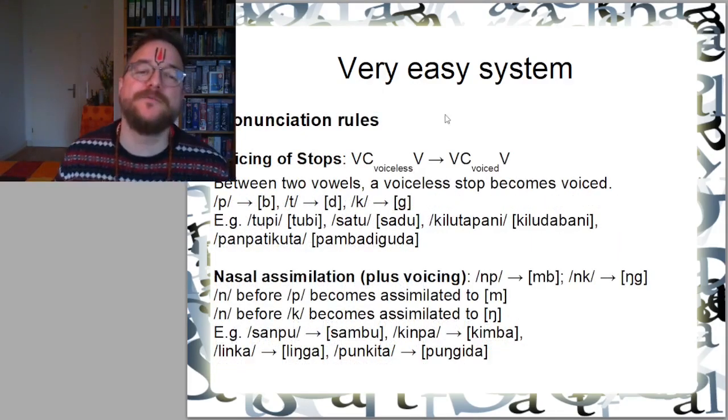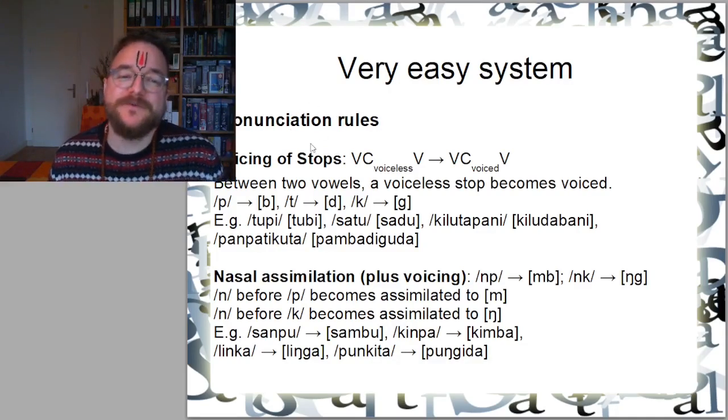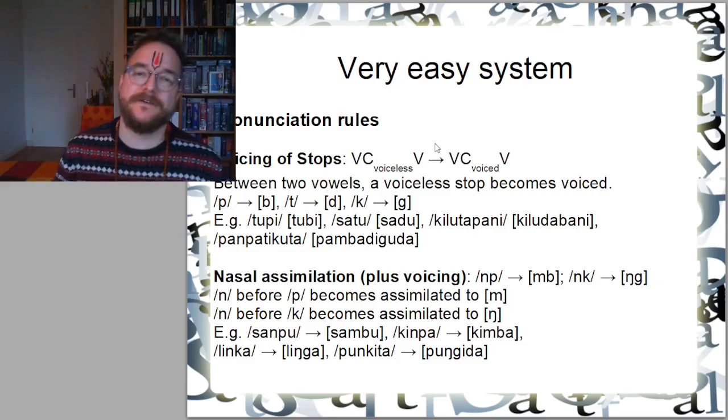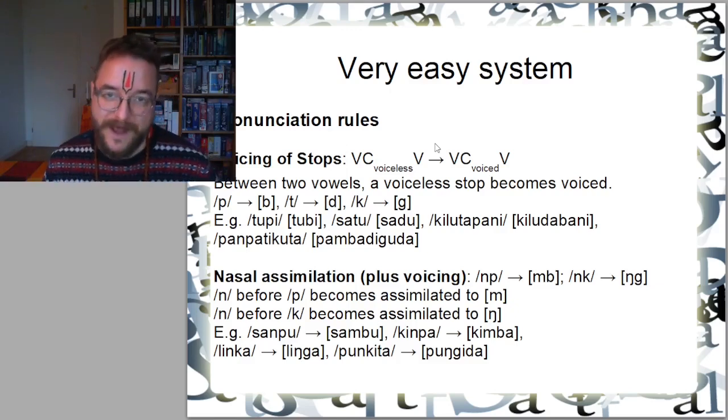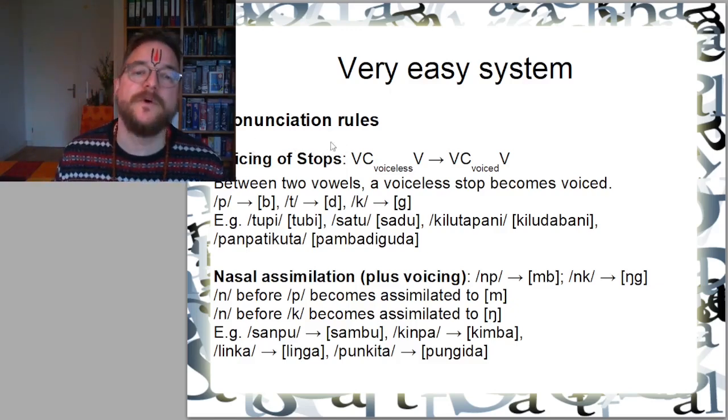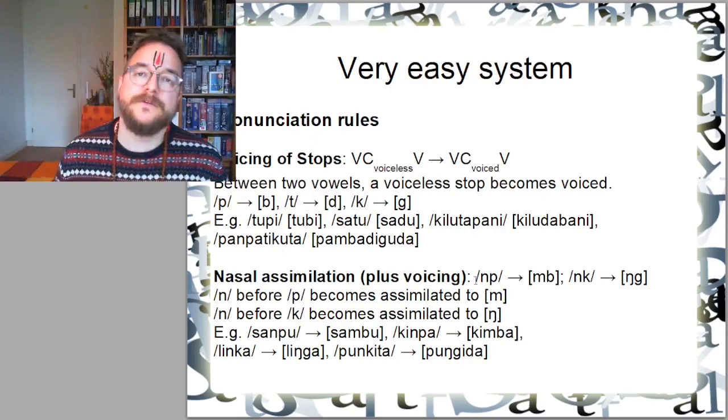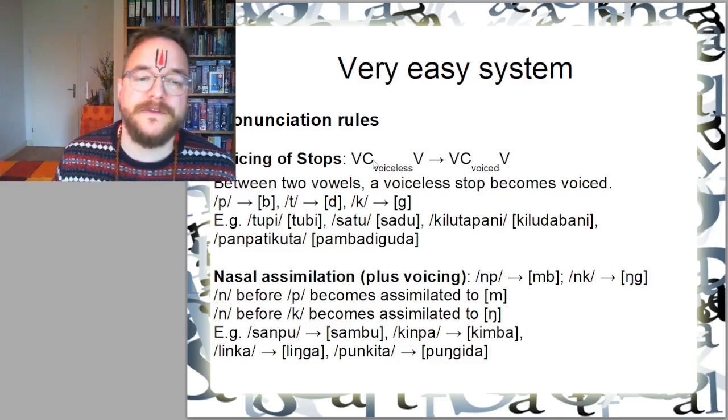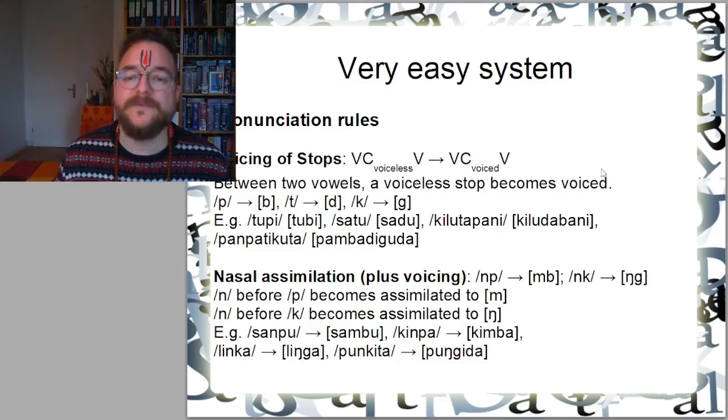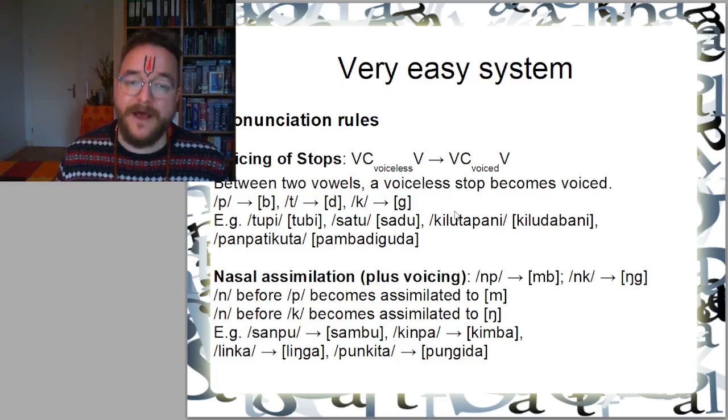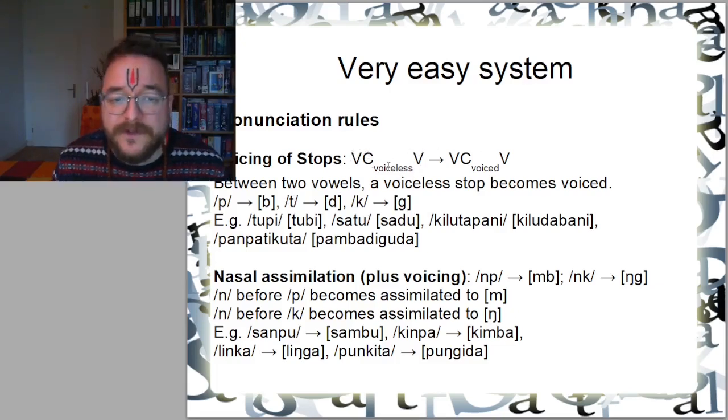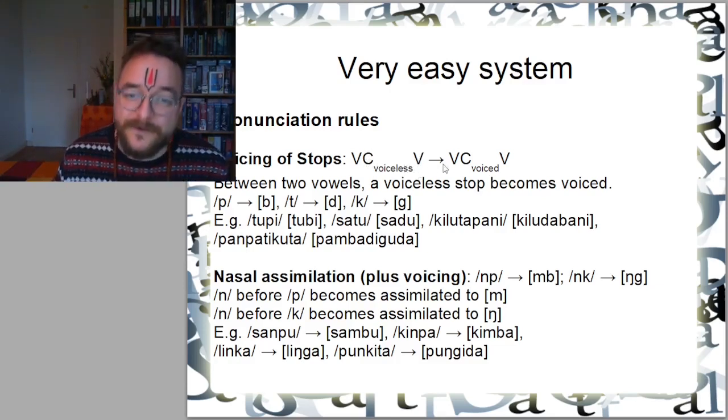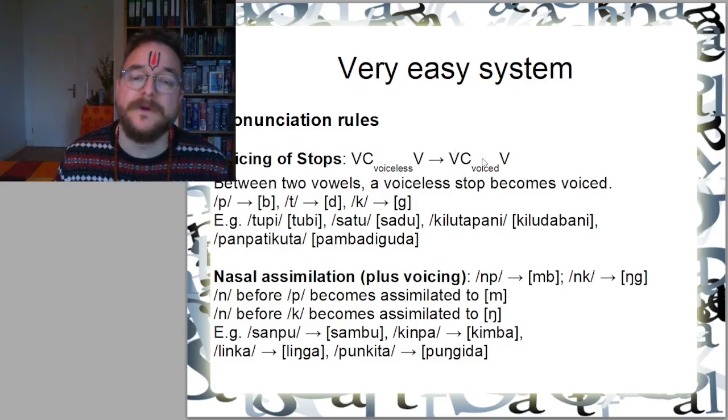Let's spice things up a little and add two pronunciation rules. Pronunciation rules are additional rules in a phonological system that make things usually more easy to pronounce. The first one is voicing of stops: between two vowels, a voiceless stop becomes voiced. So a voiceless P becomes a B, a T becomes a D, and K becomes a G, always between vowels. You can also show this with a formula: vowel, voiceless consonant, vowel transforms into vowel, voiced consonant, vowel.